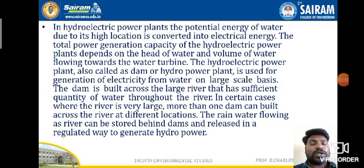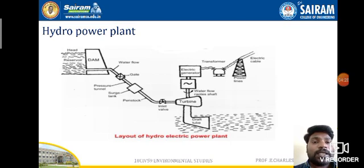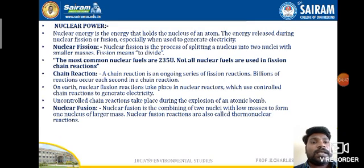The working principle of a hydro power plant: the potential energy of water, due to its high location, is converted into electrical energy. The principle is to convert hydraulic energy into mechanical energy and then from mechanical energy into electrical energy. Hydraulic energy is the conversion of potential energy and kinetic energy. Mechanical energy refers to the rotating shaft and turbine blades. From that mechanical energy, electrical energy is generated. This is the principle of the hydro power plant.